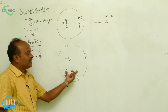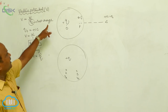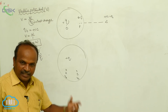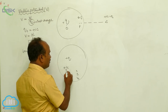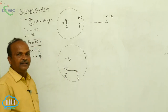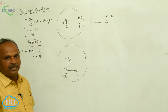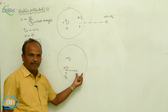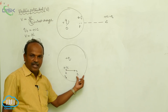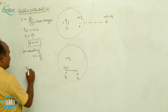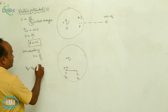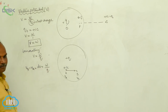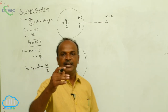The potential difference between these two points is defined as follows. To define the potential difference, take a unit positive charge and move it from point A to point B. The work done is called the potential difference between those two points. When moving from A to B, the initial potential is V_A and the final potential is V_B. The change in potential, V_B minus V_A, equals the work done per unit charge.